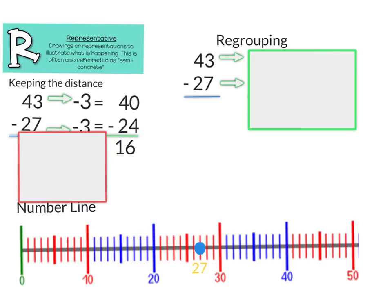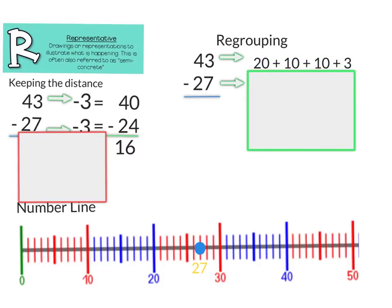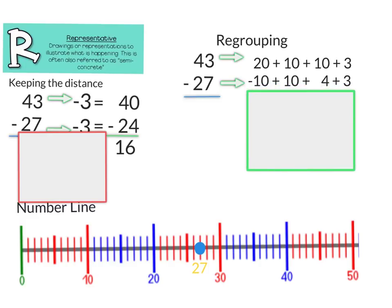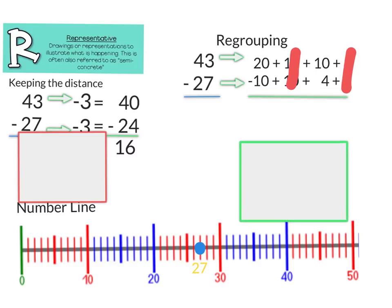Next we can look at regrouping. I'm going to decompose 43 — breaking it apart into 20 plus 10 plus 10 plus 3, which gives me 43. And then I'm going to decompose 27 into 10 plus 10 plus 4 plus 3. Now going through here, the 3s cancel out and the 10s cancel out. I have 20 minus 10 and 10 minus 4, which gives me a difference of one 10 plus six 1s, which equals 16.